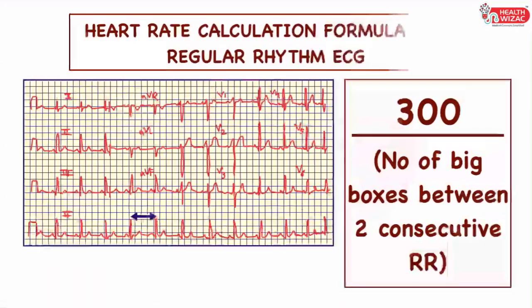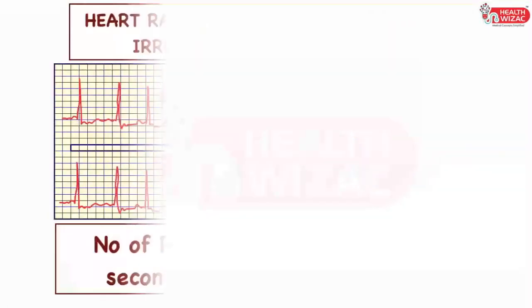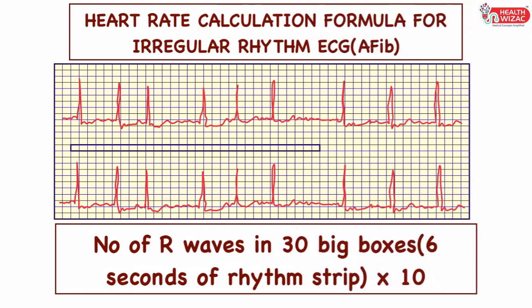Rate of regular rhythm ECG is calculated with the formula: 300 divided by number of big squares between two consecutive R waves. For an irregular ECG rhythm like atrial fibrillation, heart rate is calculated by the formula: number of R waves in 30 big squares (corresponding to a 6-second time interval), multiplied by 10.